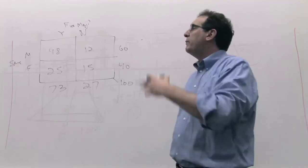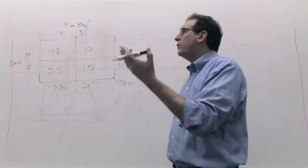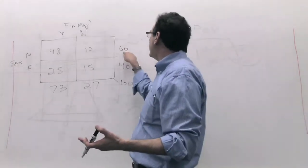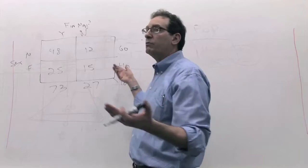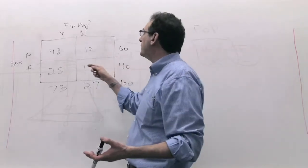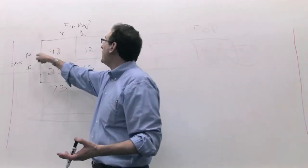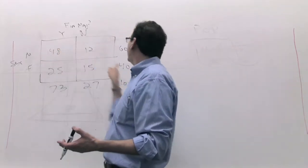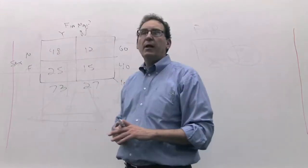Starting with these numbers, we'll repeat quickly: how many people are male — 60 out of 100. What's the probability of pulling out a male? What's the chance of pulling out somebody who's both a male and a finance major? That's 48 divided by 100.